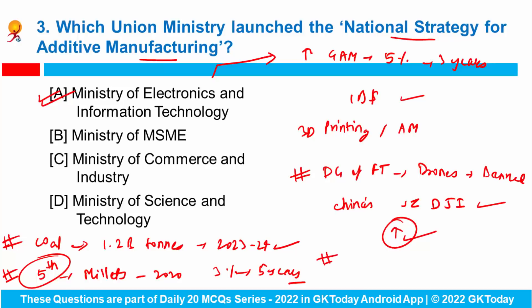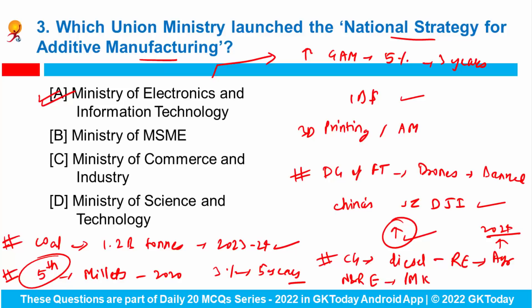Also, the central government has set the target for replacing diesel with renewable energy in the agricultural sector by 2024. The Ministry of New and Renewable Energy launched the Pradhan Mantri Kusum Scheme for farmers for installation of solar pumps and grid-connected solar and other renewable power plants. What does Kusum stand for? Please answer in the comments.